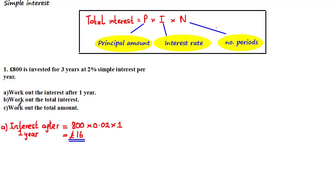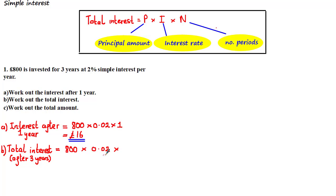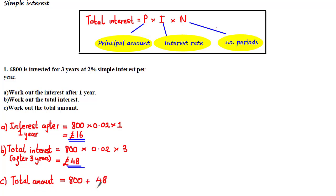For part B, we've been asked to work out the total interest. Given that the money was invested for three years, the total interest is the total amount made after three years. Using the PIN formula with N equal to 3, the total interest equals 800 times 0.02 times 3, which gives £48. Part C asks for the total amount. To find this, we add the principal (£800) to the total interest (£48), giving a total amount of £848.